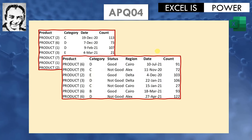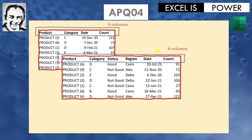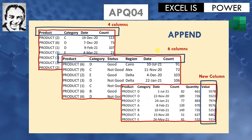In video APQ04 we saw how we can combine two tables that are inconsistent in number of columns. As you can see in this example, we have a four-column table and a six-column table. We managed to combine both together without errors, and we can add a new table with a new column and it will be appended automatically without errors and without any additional steps.